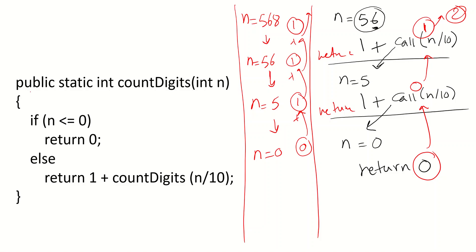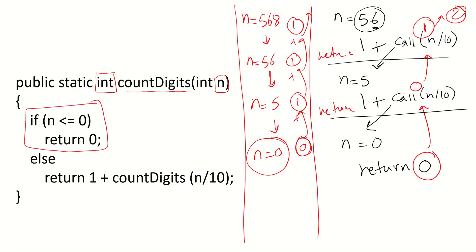The method header is: public static integer countDigits(int n). The base case: if n is less than or equal to zero, return 0 — we've finished all digits. Otherwise, the general case says we have one digit and must continue by calling the same method. Remember the method name must match the one at the top, and we pass n/10 to strip one digit each time. Recursive methods that return a value must always use the return keyword — the base case returns 0, and the general case returns 1 + countDigits(n/10).